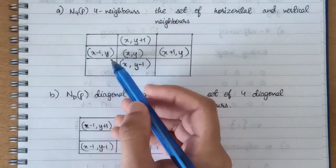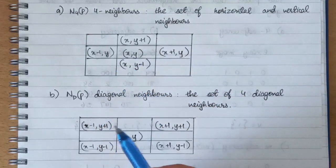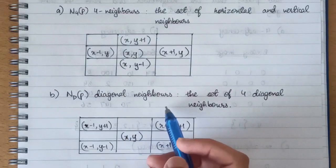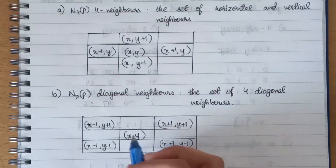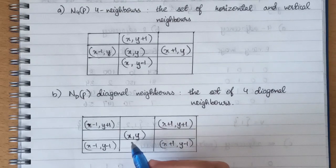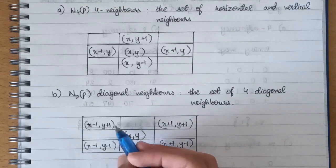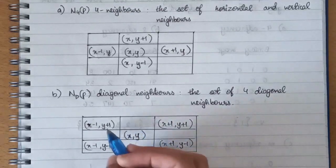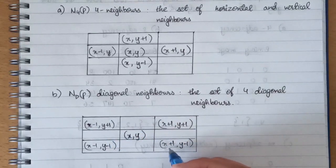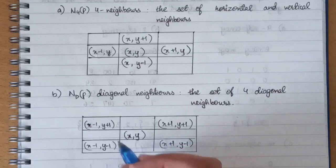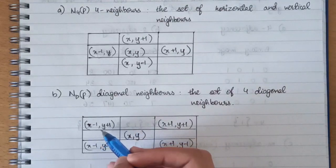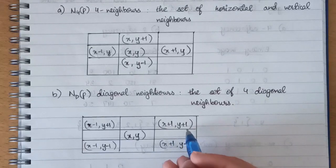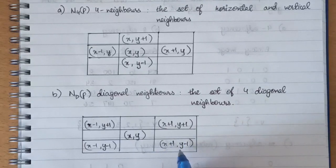The next type is diagonal neighbors, which is the set of four diagonal neighbors. If we consider (x, y), the diagonal neighbors are: (x-1, y+1), (x+1, y+1), (x+1, y-1), and (x-1, y-1).